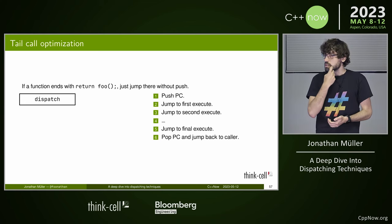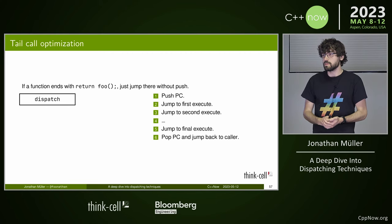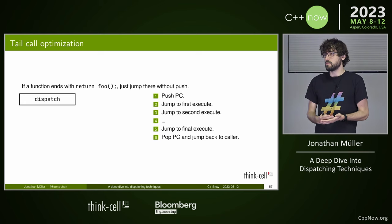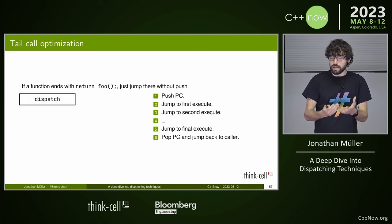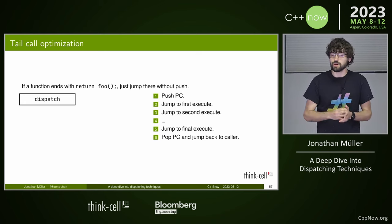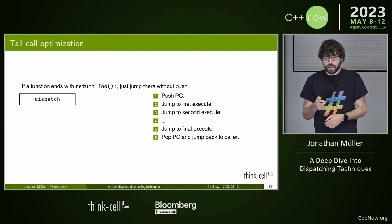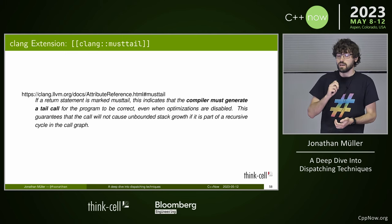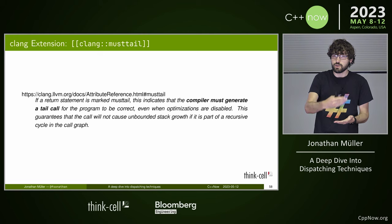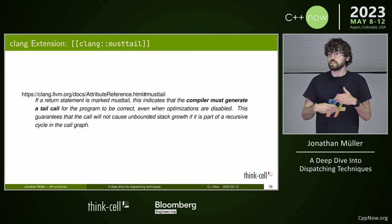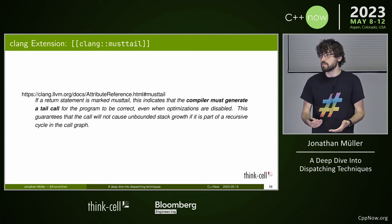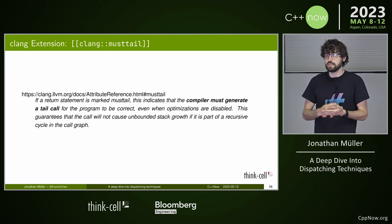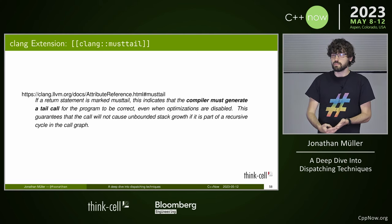This is a common optimization compilers can do for return statements of that form. However, we actually require that optimization — without it we'll have a stack overflow. So we need a way to ask the compiler to always generate a tail call. Clang provides an attribute called clang::musttail — you annotate a return statement to force the compiler to generate a tail call, even in debug mode without optimizations. I really love this attribute, but unfortunately it's only available in Clang, not GCC or MSVC.